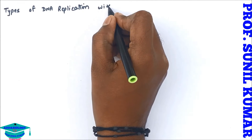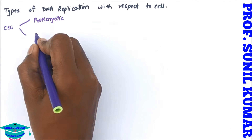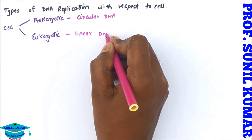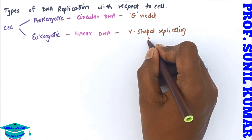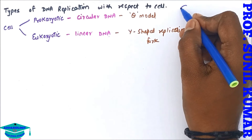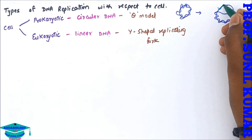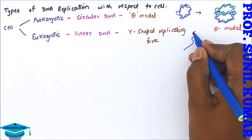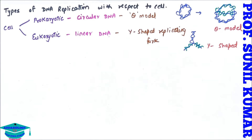There are two types of cells: eukaryotic and prokaryotic. In prokaryotic cells the DNA is circular; in eukaryotic cells the DNA is linear. Circular DNA replicates by the theta model, and linear DNA replicates by the Y-shaped replicating fork model. When the DNA opens up and new DNA is being formed, it appears like the Greek letter theta. The Y-shaped replicating fork develops a different kind of form.